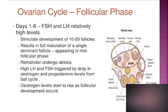The ovarian cycle is divided into follicular phase, luteal phase, and ovulation phase. When a baby girl is born, the ovaries contain up to 2 million primary oocytes, but these continue to undergo atresia. By the time the girl attains puberty, there are around 400,000 primary oocytes available. During her reproductive life, she would have ovulated approximately 400 to 500 times.